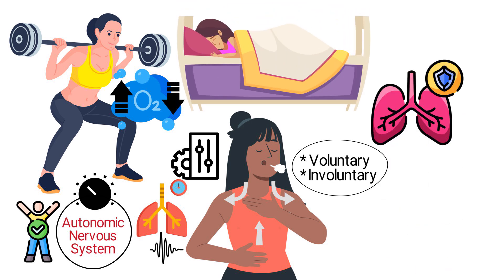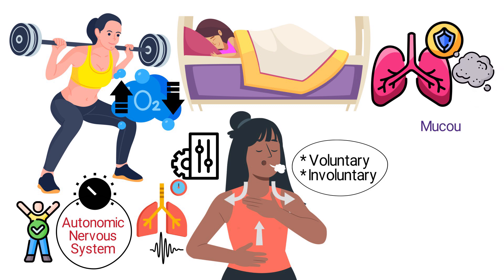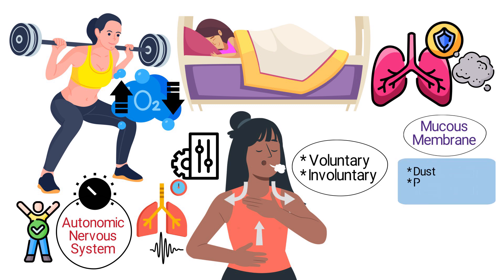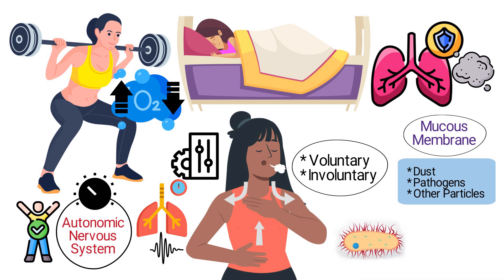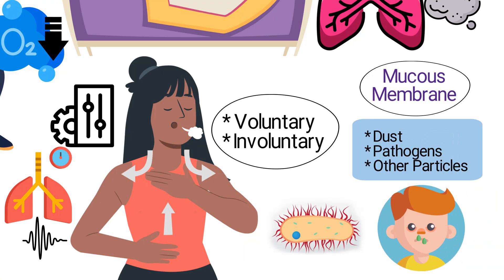The lungs also play a role in filtering and protecting the body from harmful substances. The mucous membranes lining the respiratory tract trap dust, pathogens, and other particles, while cilia — tiny hair-like structures — move these trapped particles away from the lungs and toward the throat to be swallowed or expelled.